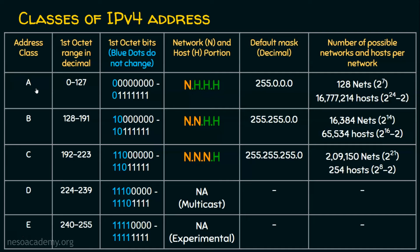In a classful world, class A's IP address will always be accompanied with the default mask 255.0.0.0. The value 255 means all bits are one in that octet. Whenever there is a 255 in an octet, it means that octet is the network portion. So in class A, the default subnet mask of 255.0.0.0 means the first octet is the network portion, and the remaining three octets are the host portion.